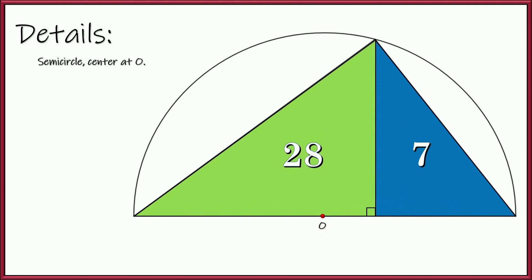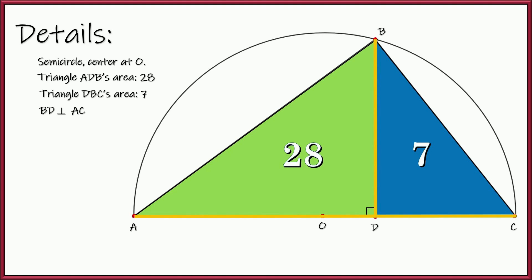We've got a semicircle. Center of that semicircle is the point O right here. And we have two triangles. So let's go ahead and name some points so we can talk about the triangles. We have triangle ABD and its area is 28. We have another triangle, DBC, and its area is 7. And we're also shown this little right angle right here. So we are also told that BD is going to be perpendicular to AC.